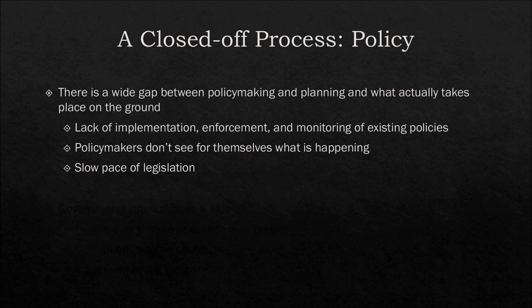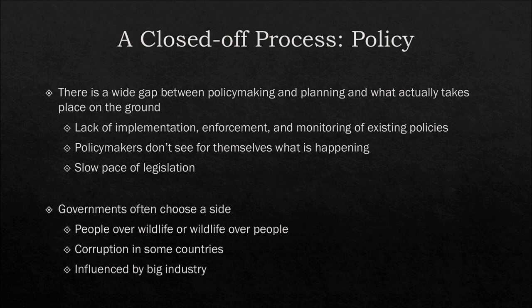Governments often choose a side — they will choose people over wildlife or wildlife over people instead of addressing both, and more often than not they choose the former. Also, corruption is significant in some countries, which gets in the way of implementing policy. And there's also the influence of big industry, where the power of money is used to maintain unsustainable practices.